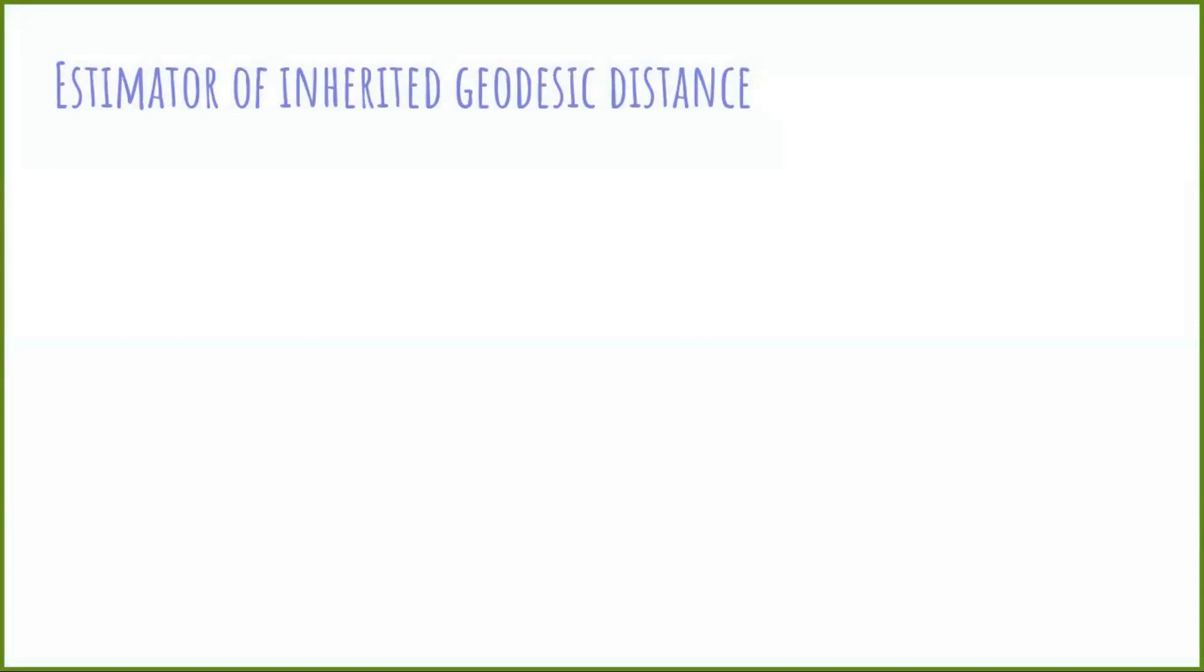To answer this question, we will build an estimator of the inherent geodesic distance from the sample. The main idea is that, locally, Euclidean distance is a good estimator of geodesic distance. But what does locally mean?